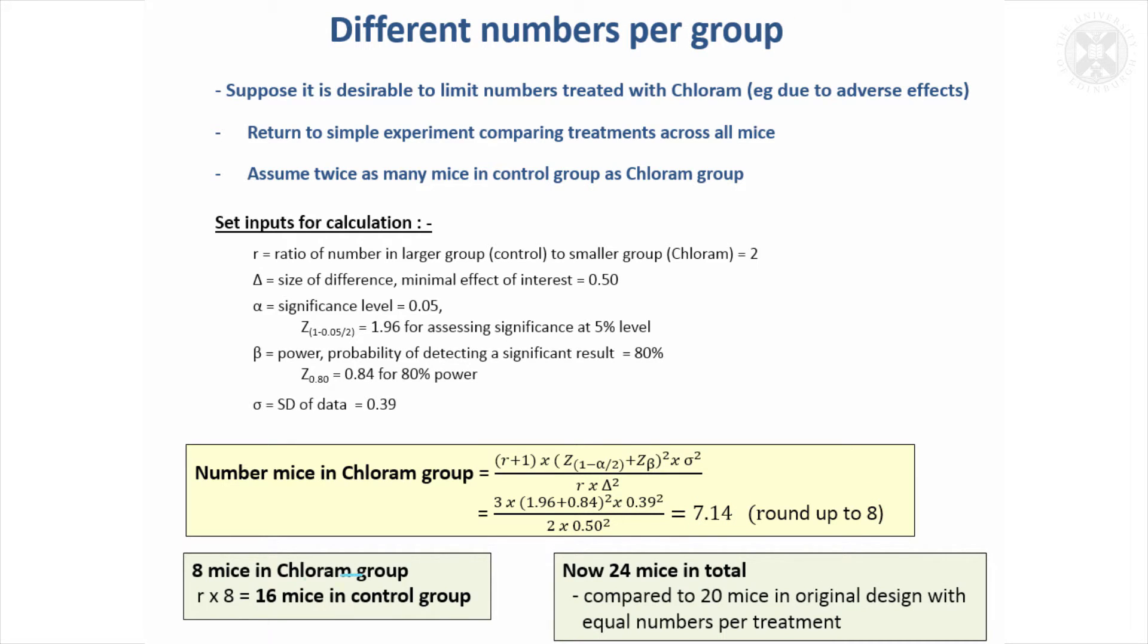But we need double that in the control group, so we need 16 mice in the control group. And in total, that's going to mean we need 24 mice. So there's always a bit of a price to pay, we're going to need more mice than we had before. But fortunately, we're going to need fewer mice in the group that were treated actively.